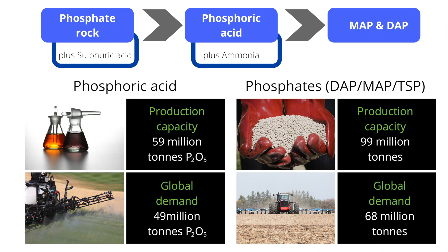Triple superphosphate is a higher analysis single nutrient phosphate product with a P2O5 content of 46%. Both of these products are produced directly from rock which is reacted with acids — SSP coming from rock reacted with sulfuric acid, and TSP coming from phosphate rock reacted with phosphoric acid.